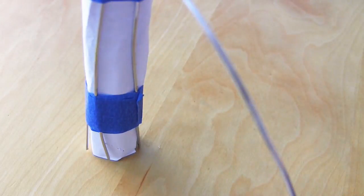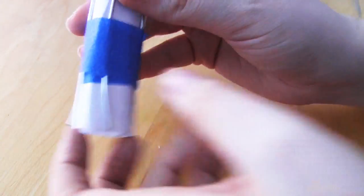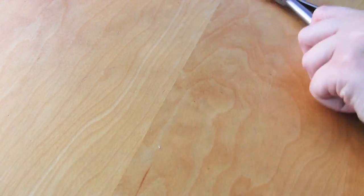All evenly spaced around the cylinder shape. So once you've done that you should have something that looks like this, which is starting to look a little bit like a tree.